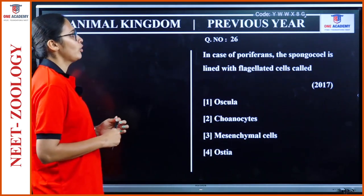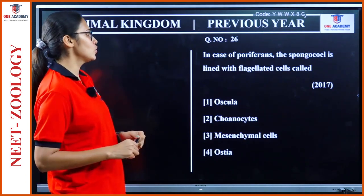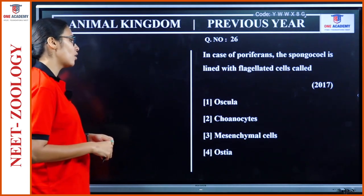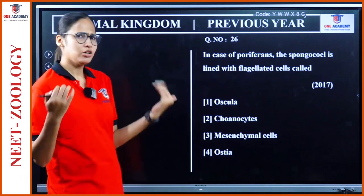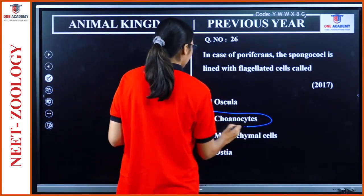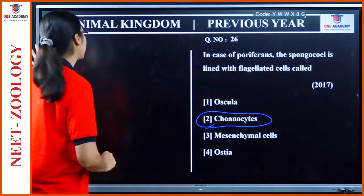Question 26: In Porifera, the spongocoel is lined with flagellated cells called choanocytes.